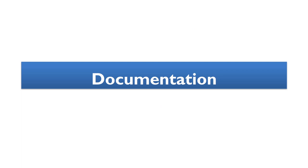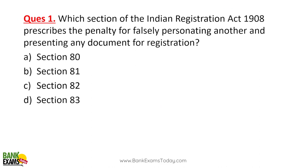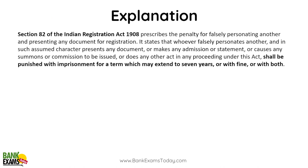Documentation is a very important topic from which quite a few questions come in the paper every year. Which section of the Indian Registration Act prescribes a penalty for falsely impersonating another person? It is Section 82 — please remember this section. According to Section 82, if you impersonate someone or give a wrong name, there can be a fine and imprisonment up to seven years, or both.